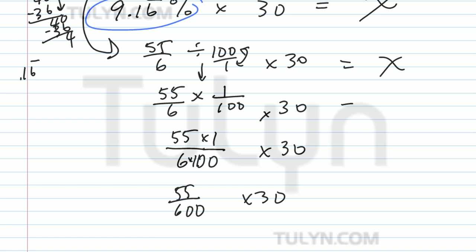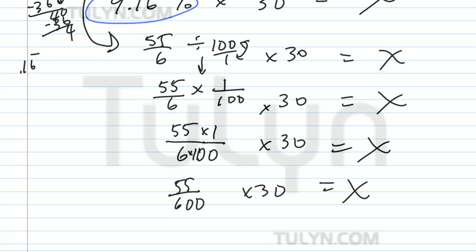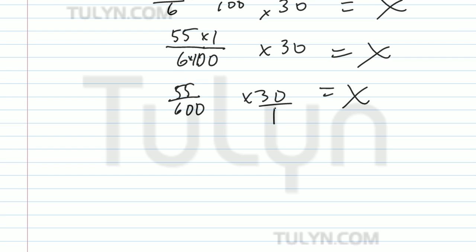That's going to give you x. And then 30 over 1, so find what's in common with your numbers. What goes into 30 and 600? 30. So 30 divided by 30 is 1.